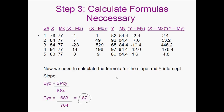The next thing we need to calculate is our slope. Our slope is going to be abbreviated by byx equals our covariation divided by our sum of squares. So we're going to take the answers that we got before and we're going to throw them in the formula. So 683 divided by 784 is 0.87.